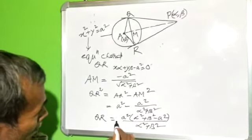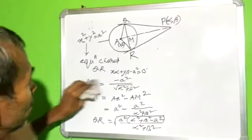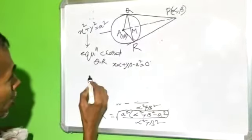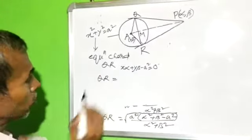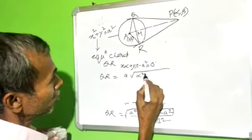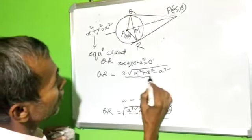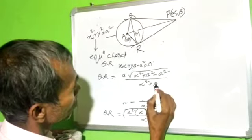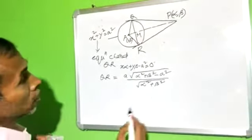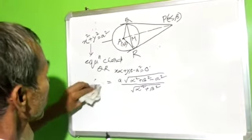Therefore, QR equals a times root over alpha square plus beta square minus a square, divided by alpha square plus beta square. Note: this result is actually QM, not QR.